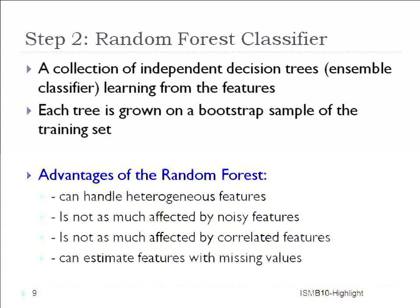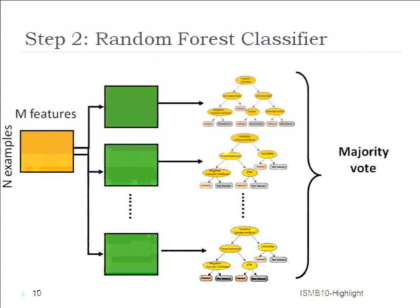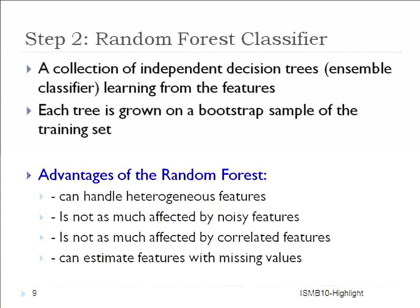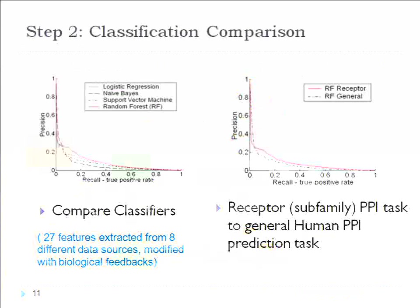We use a classic classifier called random forest — a collection of independent decision trees where each tree is learned on a bootstrap sample of the training set. We do a feature bootstrap sample for multiple bootstrap samples; on each sample we learn a decision tree, and for a test example, the final decision is a majority vote from all trees. The advantages are that it handles heterogeneous features, is not affected by noisy or correlated features, and has a built-in strategy to estimate missing values.